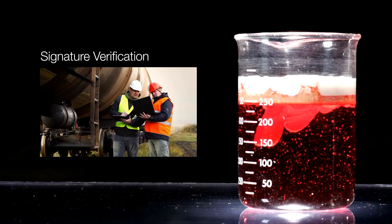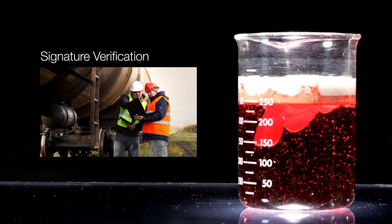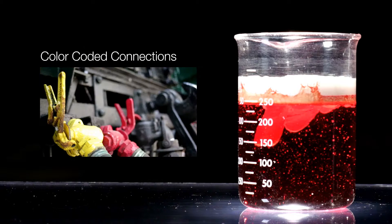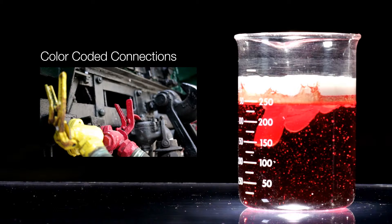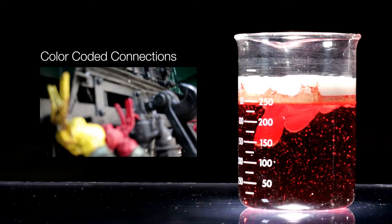Each Hexion bill of lading document has a signature block to verify that offloading and storage tank selection has been verified by a mill representative. Having color-coded offload connections and offload lines for each product can help further distinguish between the various products being delivered to the site.